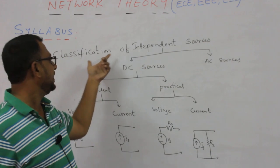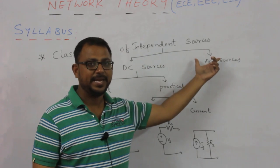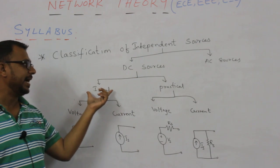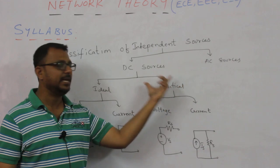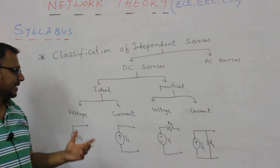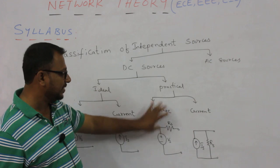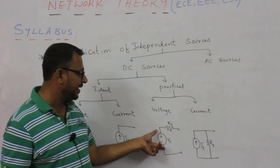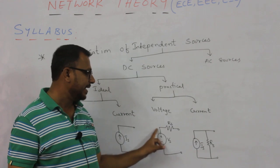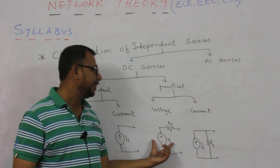Next, we are going to discuss the classification of independent sources, broadly into DC sources and AC sources. DC sources can be classified into ideal DC sources and practical DC sources, each of which can be a voltage source or a current source. The circuit symbol for a practical DC voltage source is represented as Vs in series with Rs, where Rs is the internal resistance and Vs is treated as an ideal voltage source.